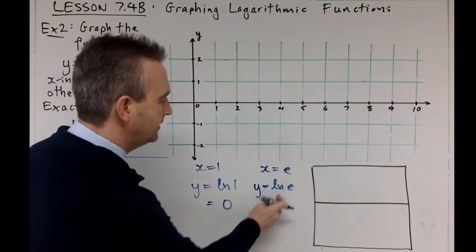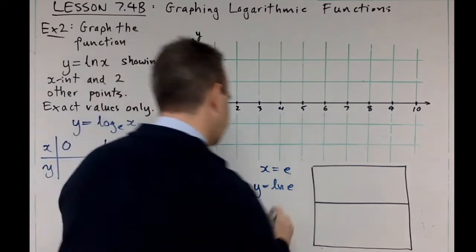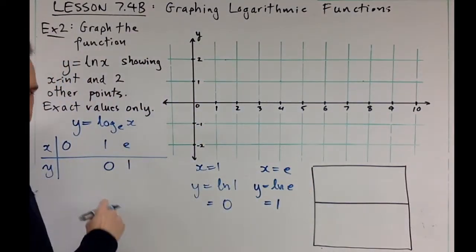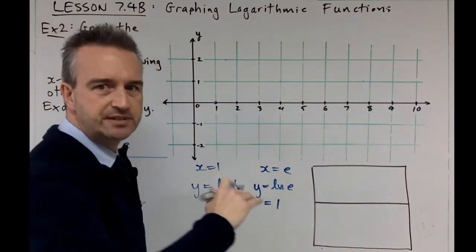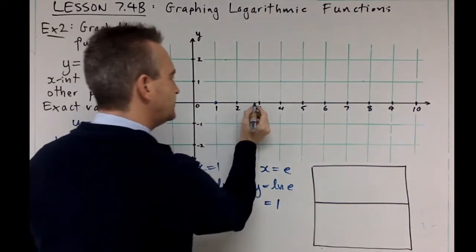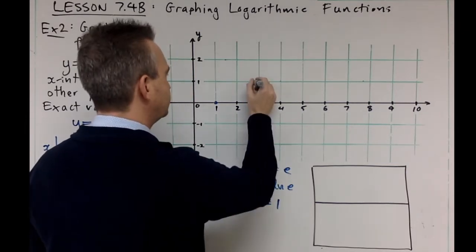What's ln e? You've got to think - e to the power of what equals e? One. So you've got the point e, one. So we can put these in. One, zero - that's there. It's going to give the same log shape. E, one - so e is about 2.718281828, it's going to be there.